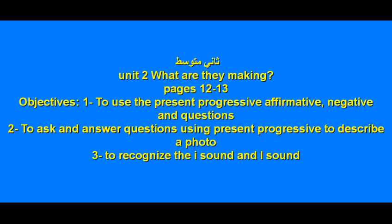What are our objectives? Number one: to use the present progressive — المضارع المستمر — in the affirmative, negative, and questions. Number two: to ask and answer questions using the present progressive to describe a photo. And number three: to recognize the difference between the /iː/ and /ɪ/ sounds.